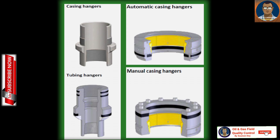Hangers: casing hangers are available as slip-type hangers where four or more slip wedges are supported in a bowl having a 45-degree landing shoulder. Alternative mandrel-type casing hangers also have a 45-degree landing shoulder and are designed to fit into the same casing head spools. Tubing hangers are threaded mandrel-type hangers with a 45-degree load shoulder, extended neck, tubing space and BPV preparation. Mandrel hangers are available with API threads as well as premium threads.